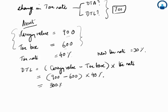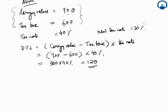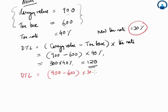Now let's assume that there was a new tax rate of 30%. What will happen in this case? Deferred tax liability should ideally be equal to 900 minus 600 multiplied by 30%. So this is equal to 300 into 30%.